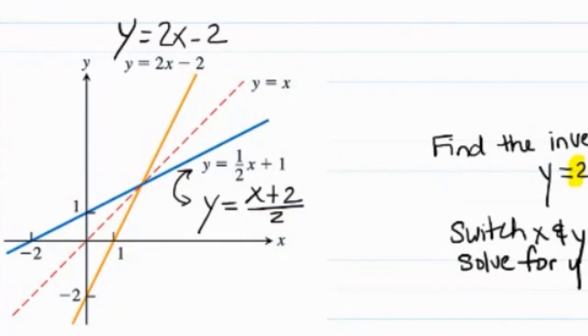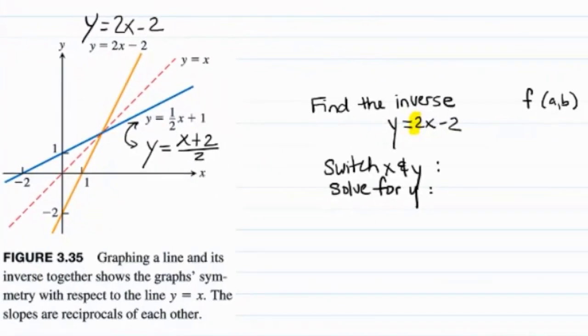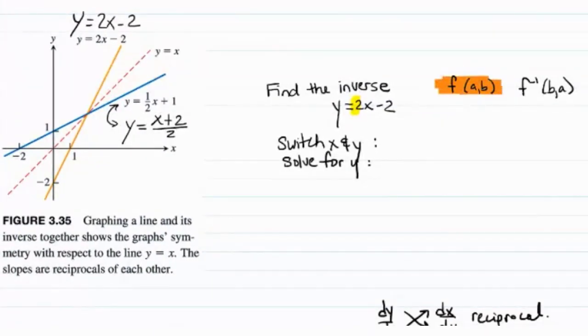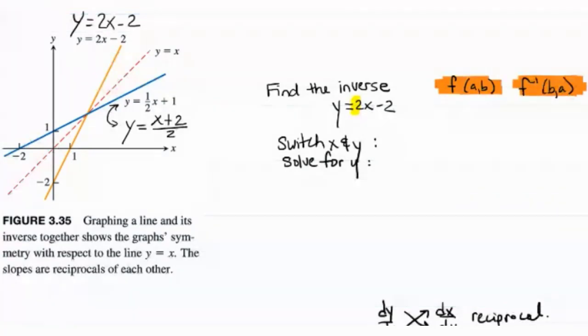So one way to think about inverse functions is that they reverse each other's operations. But the way we make that happen is literally just switching the x and the y coordinates. If you have a function that goes through a point a, b, its inverse will go through the point b, a.